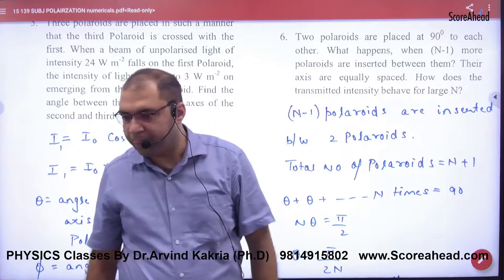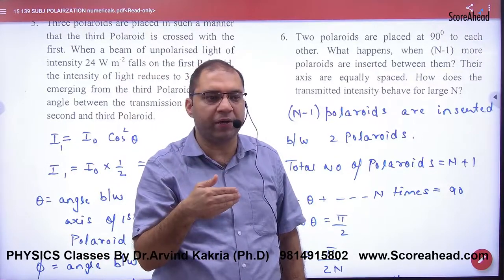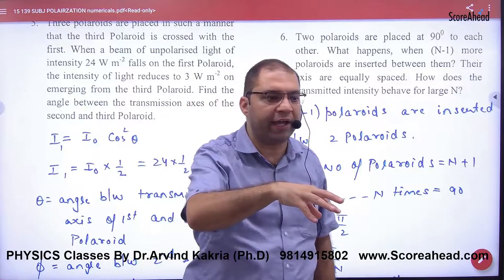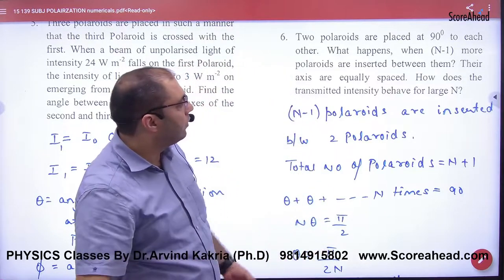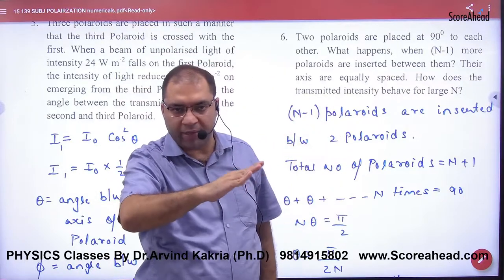So the first and the last Polaroid is 90. And how many Polaroids are in the middle? N-1 Polaroid. And the axis is equally spaced. That means the angle is equal.